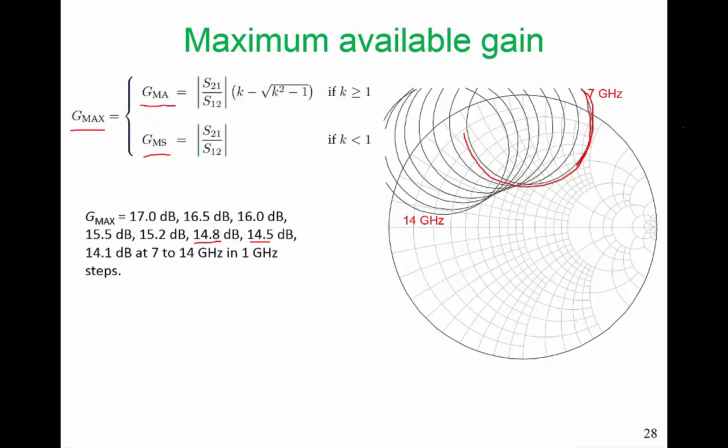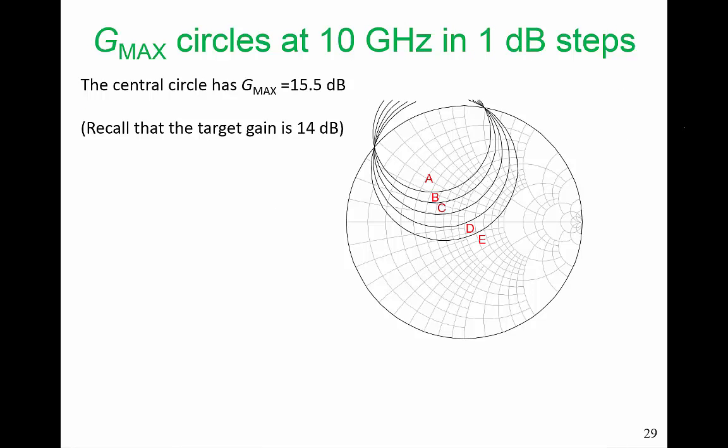This is one way of looking at maximum available gain. We're looking at the maximum available gain at several frequencies. Another way of looking at maximum available gain is to pick on a frequency and look at what the locus will be for Gamma S when we offset the gain by certain amounts, in this case in 1 dB steps. Gmax at 10 GHz is 15.5 dB and these circles indicate what Gamma S can be for 1 dB trade-offs in the gain.